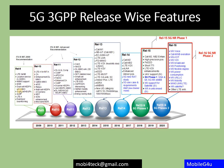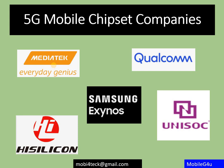There are five main chipset companies you must follow: MediaTek, Qualcomm, Samsung, Unisoc, and HiSilicon. HiSilicon is a product of Huawei. You should always stay updated on these companies via LinkedIn or any social media platform — follow them to know what new chipsets are coming, what features they include, and how they differ from LTE.